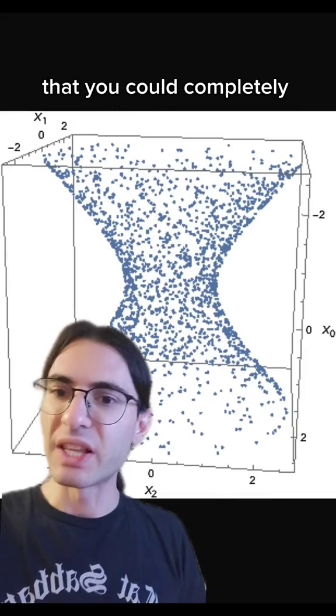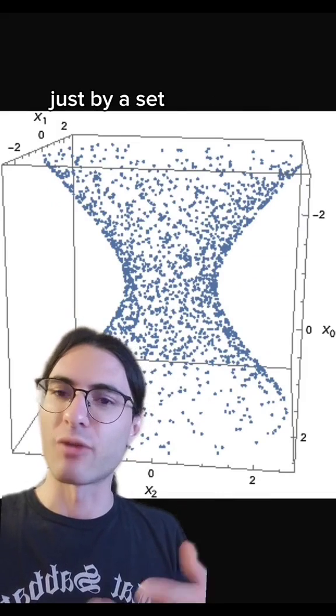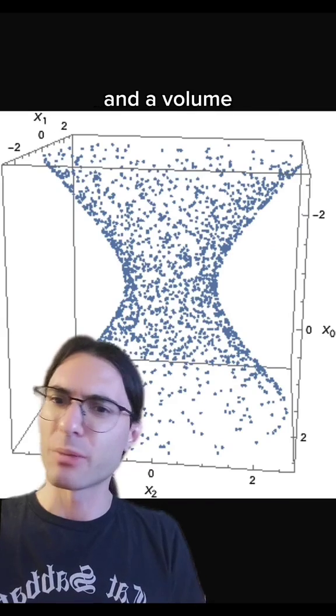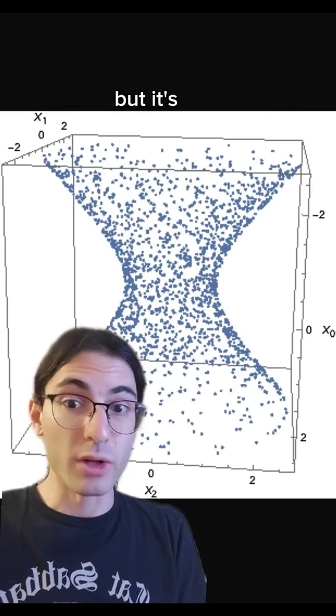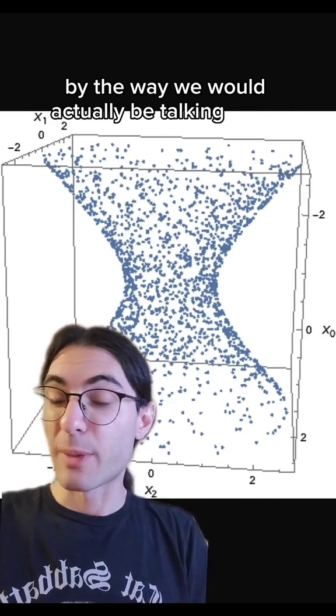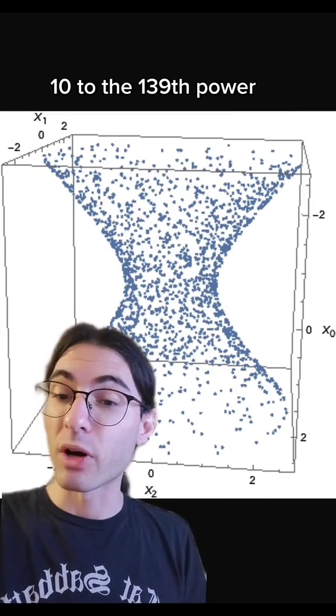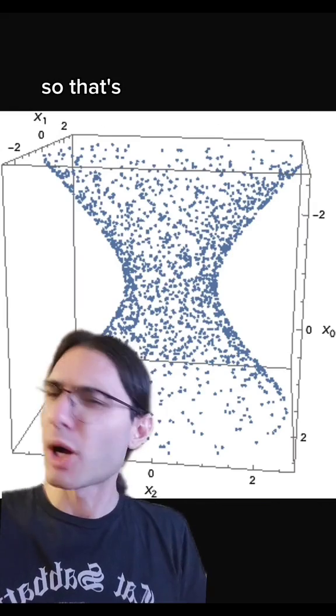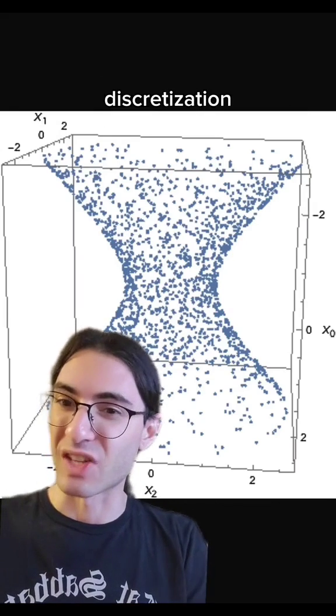This is really surprising, right, that you could completely describe a spacetime just by a set of orderings on a set of points and a volume? That seems kind of strange. But it's true. By the way, we would actually be talking about 10 to the 139th power of points per cubic centimeter, so that's probably why we haven't seen the spacetime discretization yet.